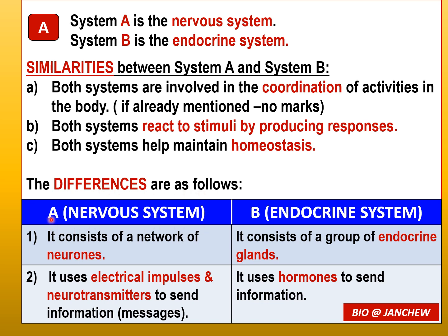Now for the differences — remember to label A and B clearly. System A consists of a network of neurons (nerve cells); system B consists of a group of endocrine glands such as the pituitary gland. System A uses electrical impulses (nerve impulses) and neurotransmitters at the synapse to send information; system B uses hormones to send information or messages. Each similarity and difference is worth one mark, so make sure they add up to 10.